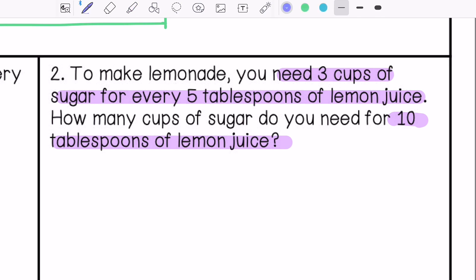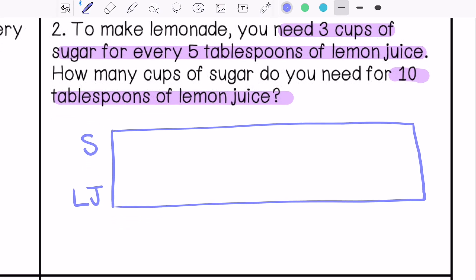We have sugar and lemon juice. For three cups, you need five tablespoons. So for 10 tablespoons, which is times two, you need six cups of sugar.